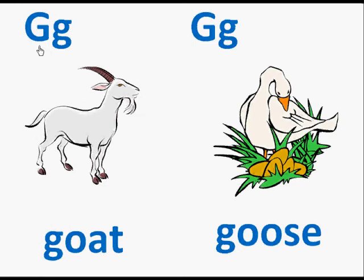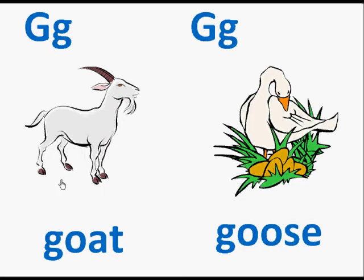Here we have the capital G, the small g, a picture of a goat. Here's the word goat. The letter G makes the sound guh. So we'll read this page: G, goat, guh guh guh.